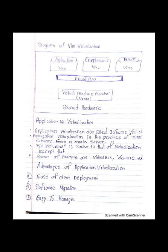Next is application virtualization, also called software virtualization. Application virtualization is the practice of running software from a remote server. Software virtualization is similar, except that it is capable of abstracting software from its installation process. Some examples are VirtualBox and VMware.